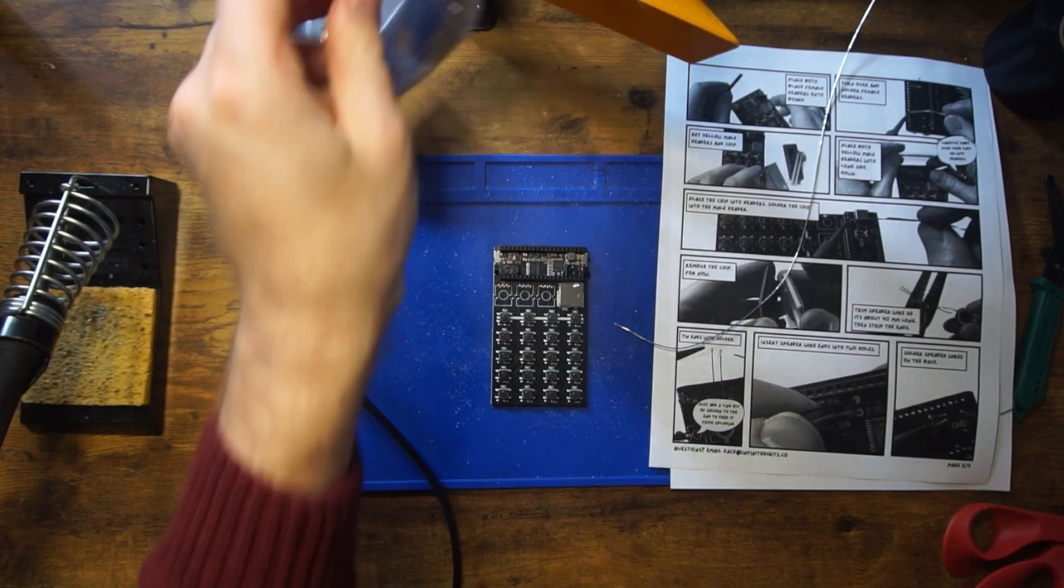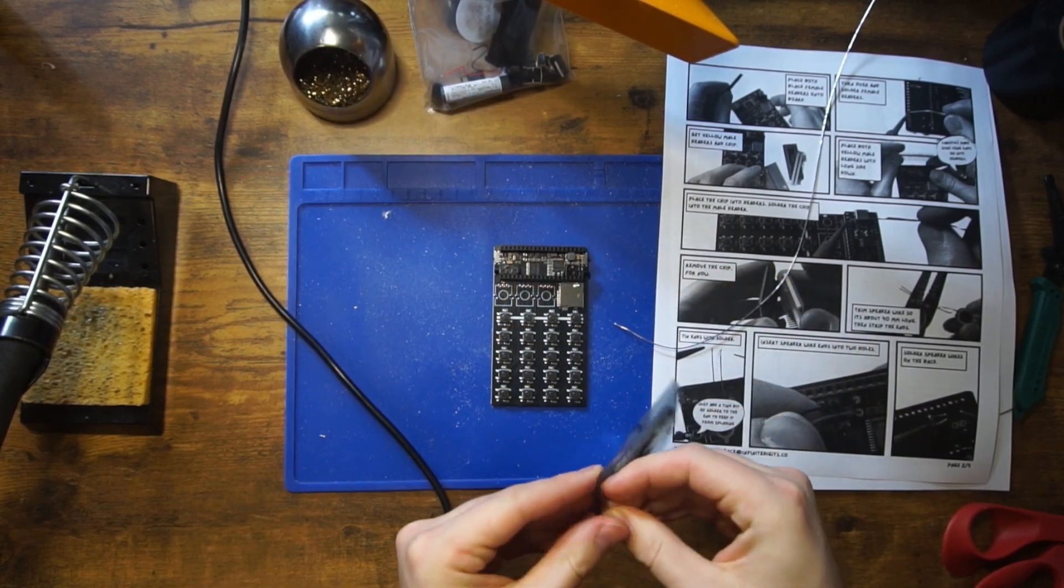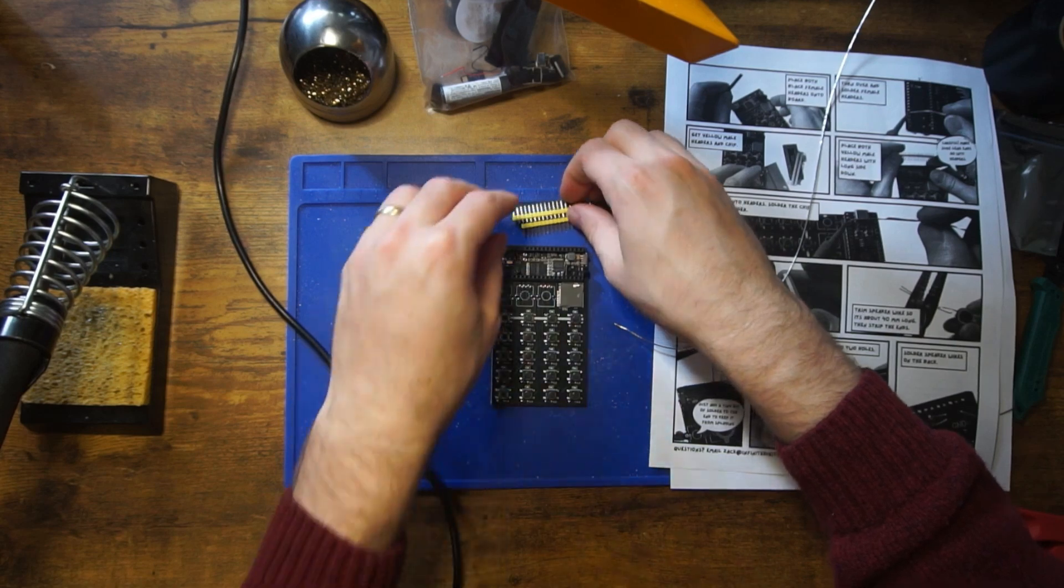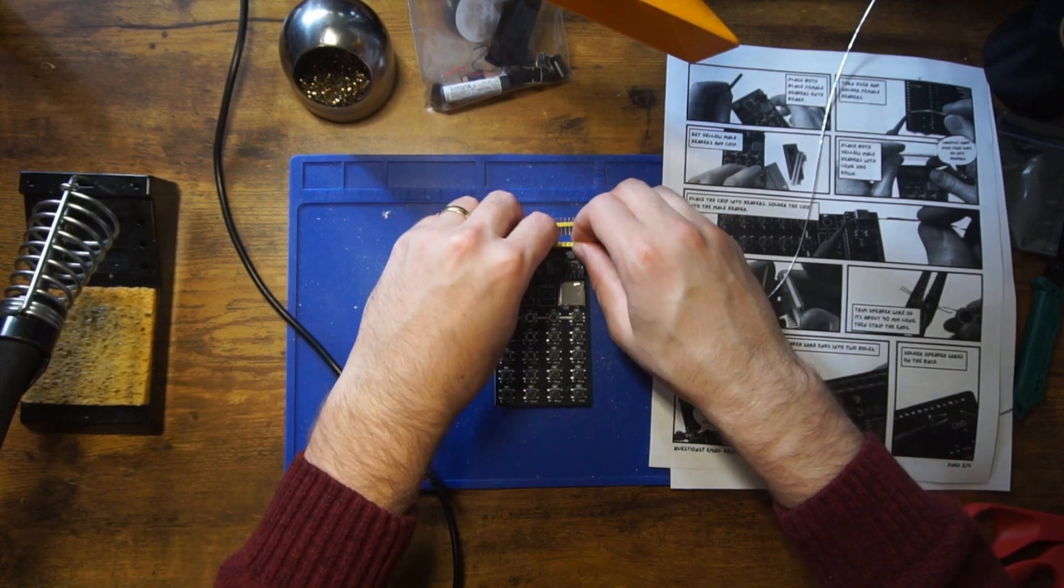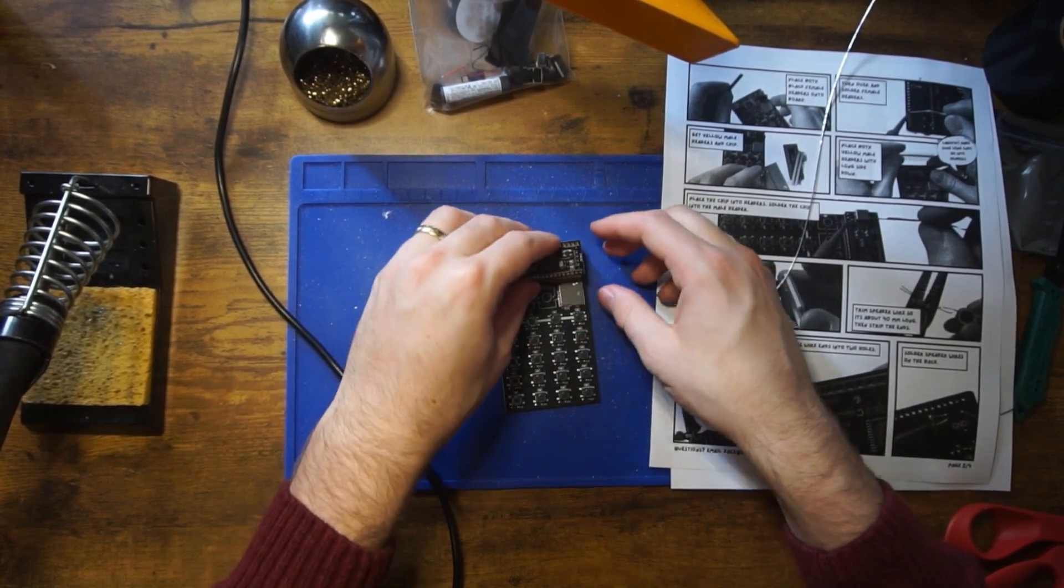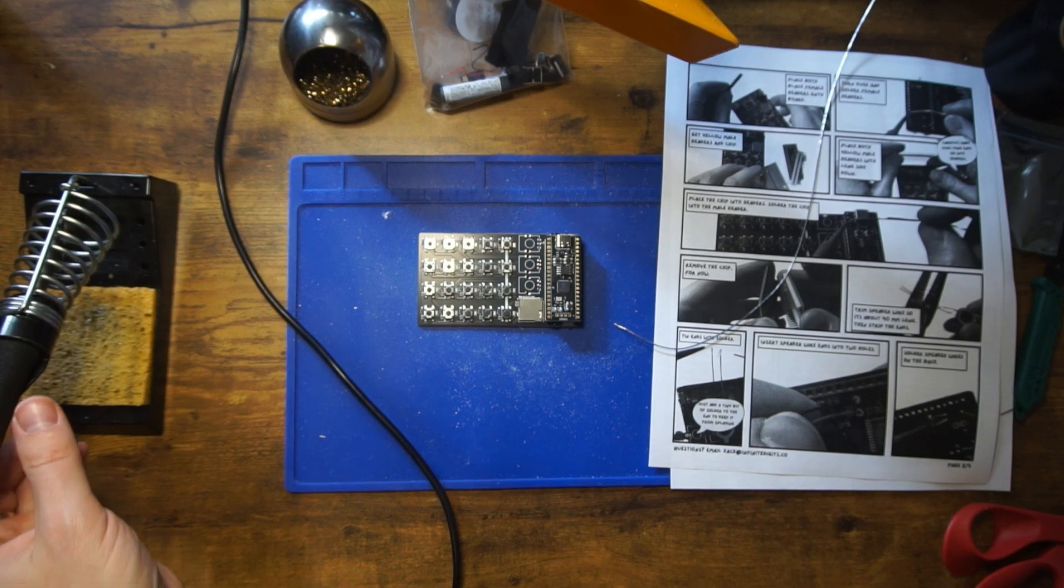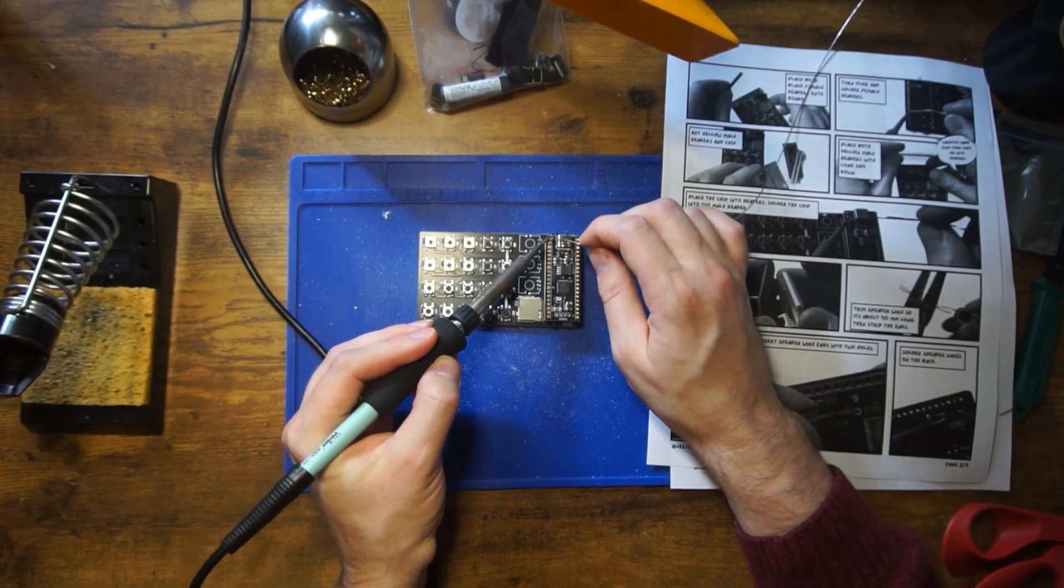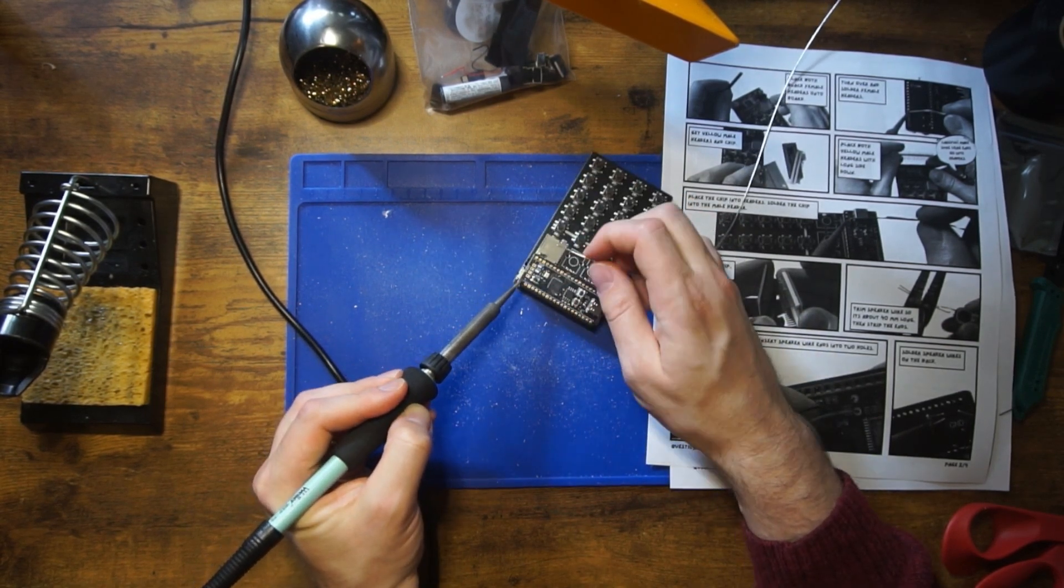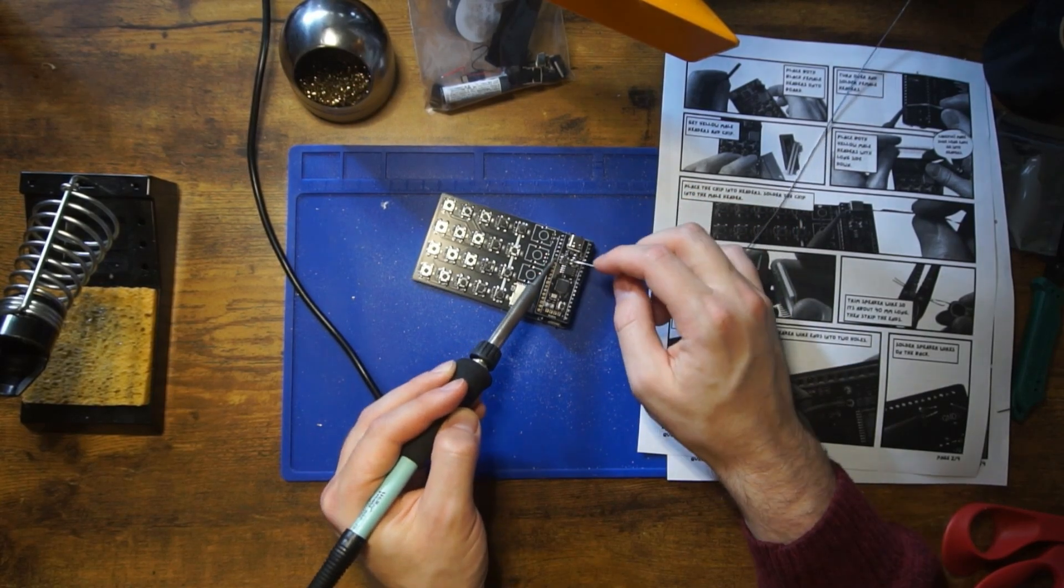Okay, once that's done, you can grab the yellow male headers from inside the bag with the chip, and you can place those right into the female headers and throw away the rest. Then the Pico chip can go right on top of those headers. Just make sure it's fully inserted. And again, here it's best to solder one from each side to make sure it's level. Go ahead and press the solder iron down pretty firmly to make sure it's flush. And now just go ahead and solder all 20 on either side.